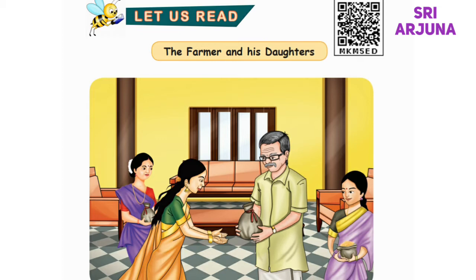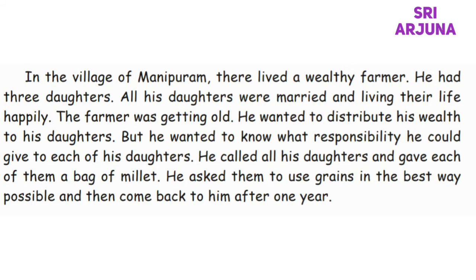The Farmer and His Daughters. Strands, first I will read the story — listen carefully. In the village of Manipuram, there lived a wealthy farmer. He had three daughters. All his daughters were married and living their life happily. The father was getting old. He wanted to distribute his wealth to his daughters, but he wanted to know what responsibility he could give to each of his daughters. He called all his daughters and gave each of them a bag of millet.